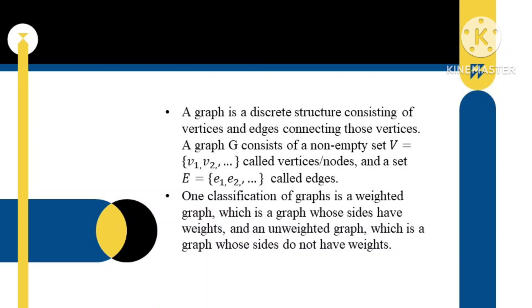A graph consists of a non-empty set, which is V1, V2, and else called vertices or nodes, and a set E, E1, E2, and else called edges.